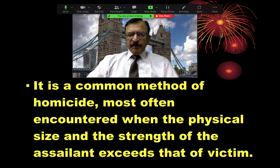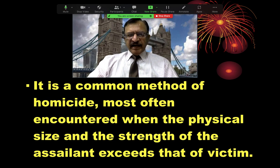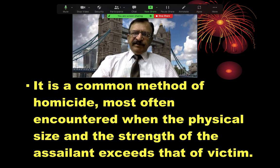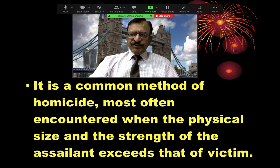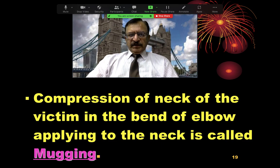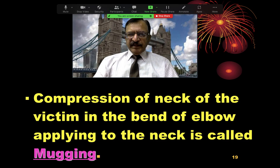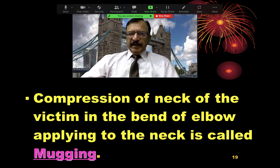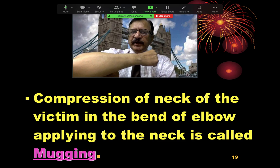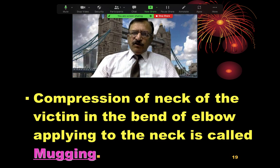It is a common method of homicide. Most often it is encountered when the physical size and strength of the assailant exceeds that of the victim — that the victim is weak, debilitated, small in size, like children or women. The assailant sometimes compresses the neck in the bend of the elbow. When the neck is compressed between the bend of the elbow, this is called mugging.